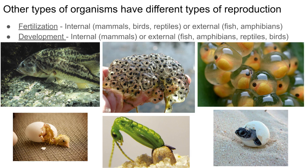In birds, the egg cells are fertilized inside the female's body, a shell forms around the egg, the female lays it, and the embryo grows in the egg outside the body. Only mammals — with some exceptions — have internal development. All other species — birds, reptiles, fish, amphibians, insects — have embryos that develop outside the body. Mammals are the only group where embryos and fetuses develop inside the mother.